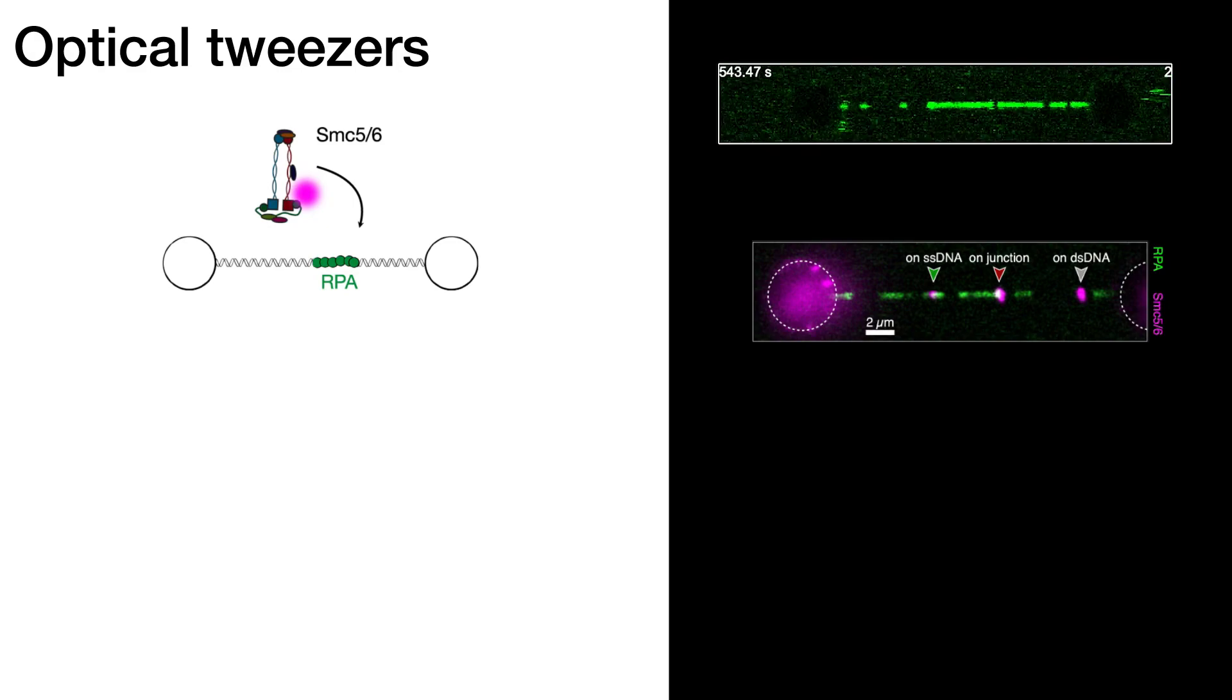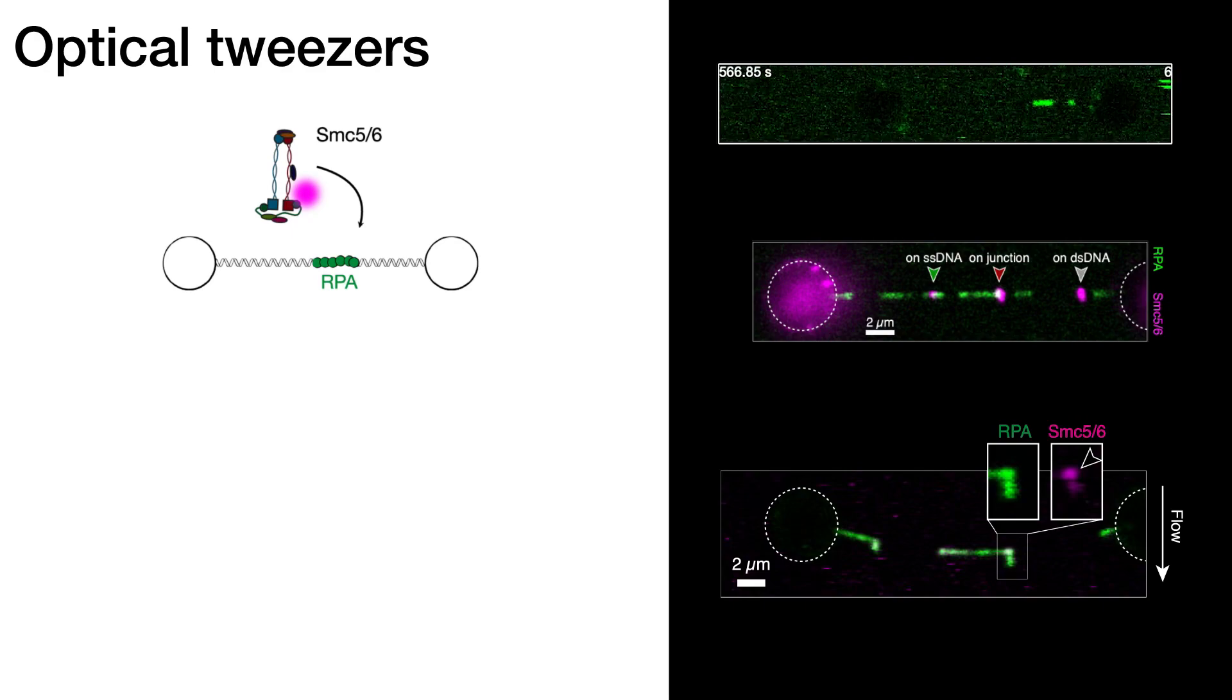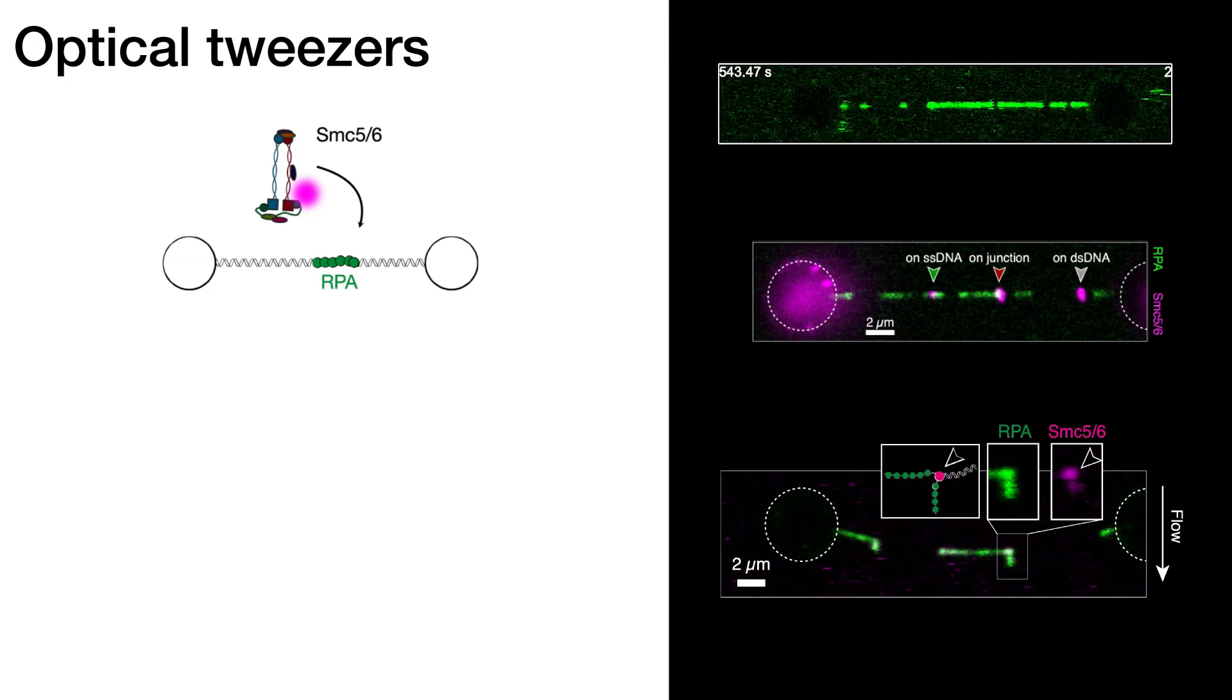So to prove that these junction-sitting SMC56 complexes really sit on the junction and not close to them, what we did was we exposed these tethers to flow in a perpendicular way. In this case, the buffer flow comes from the top. This stretches out the unpeeled part of the DNA, as is shown here. And we find that SMC56 is primarily targeted to the junction of double-stranded and single-stranded DNA.